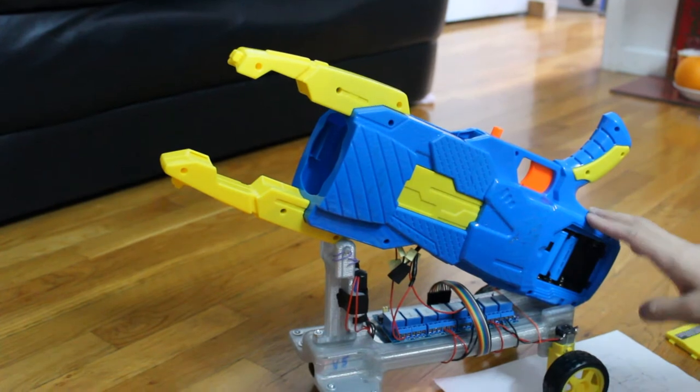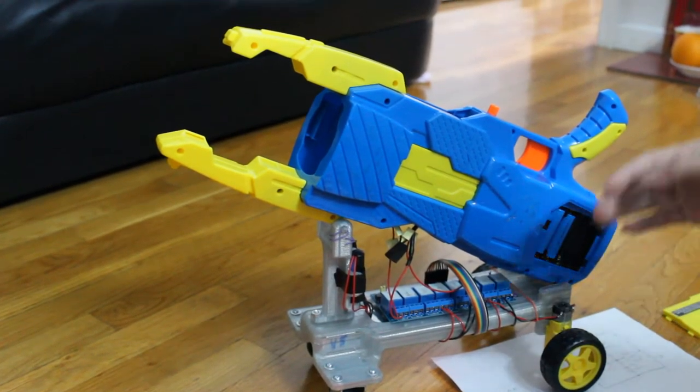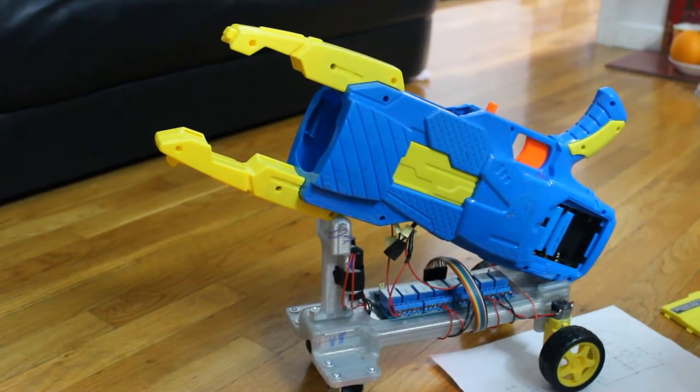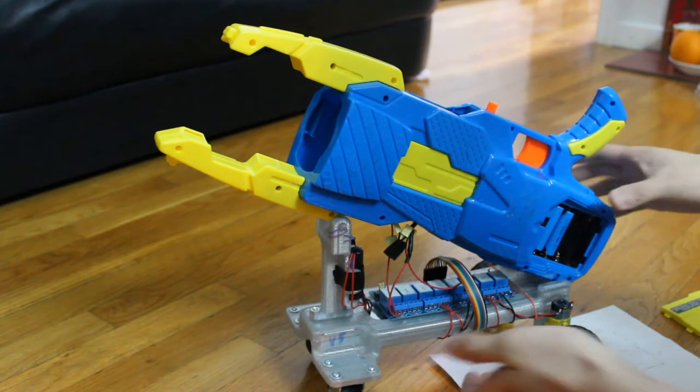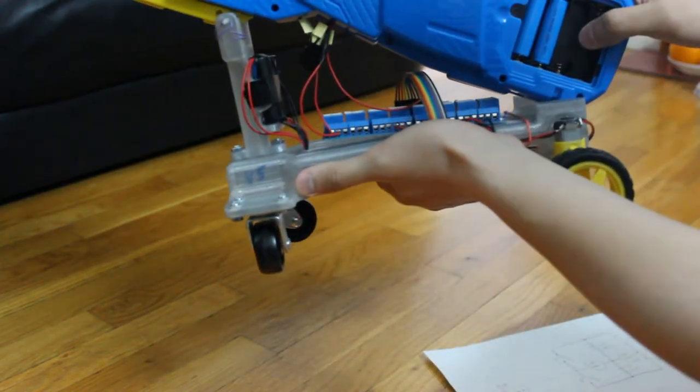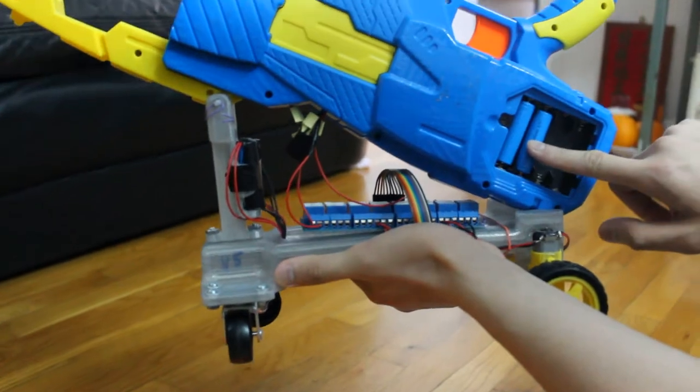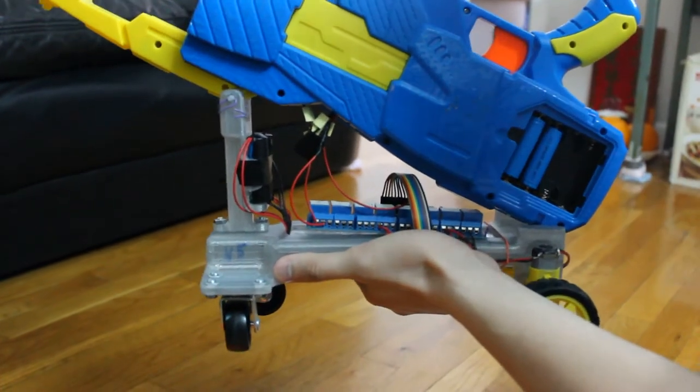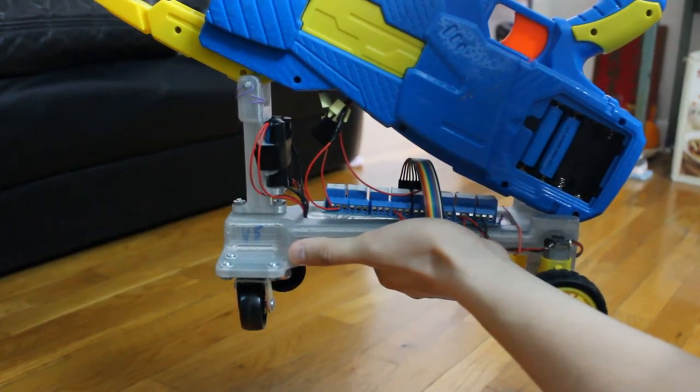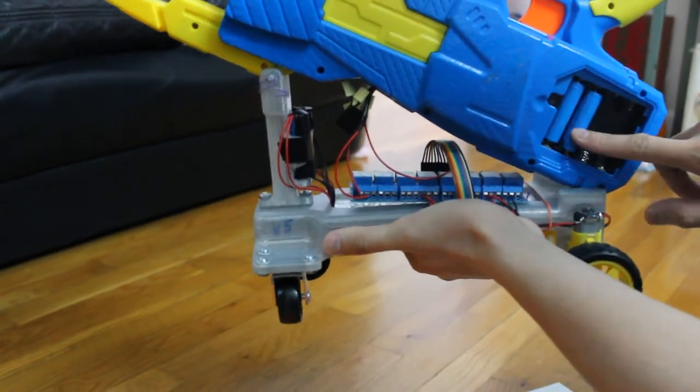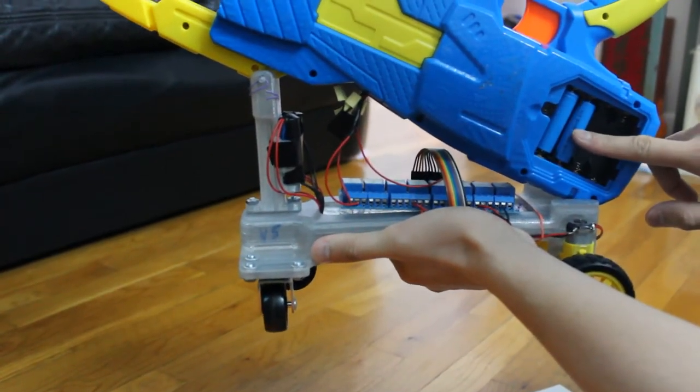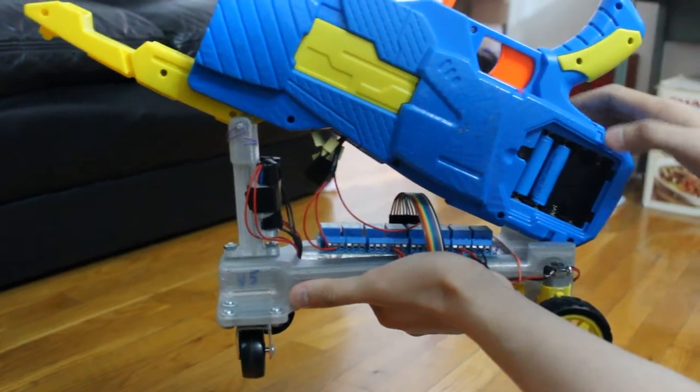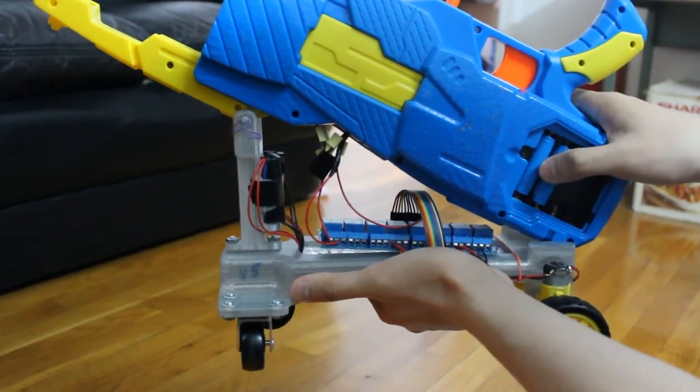Originally, this thing ran on four AA batteries with a total of six volts, each AA battery being 1.5 volts. I've modified it to accept two IMR batteries. Each of these batteries is 3.7 volts, so the total voltage right now is 7.4 volts.